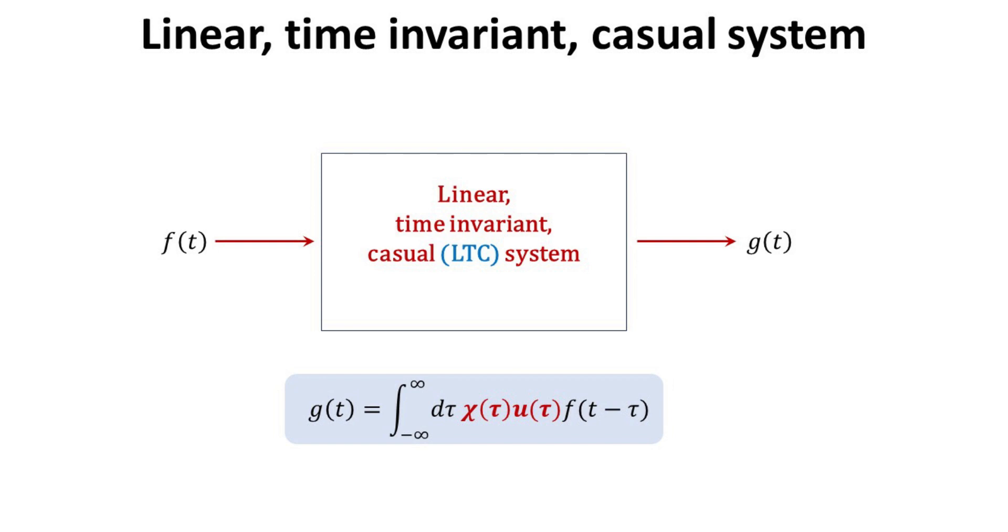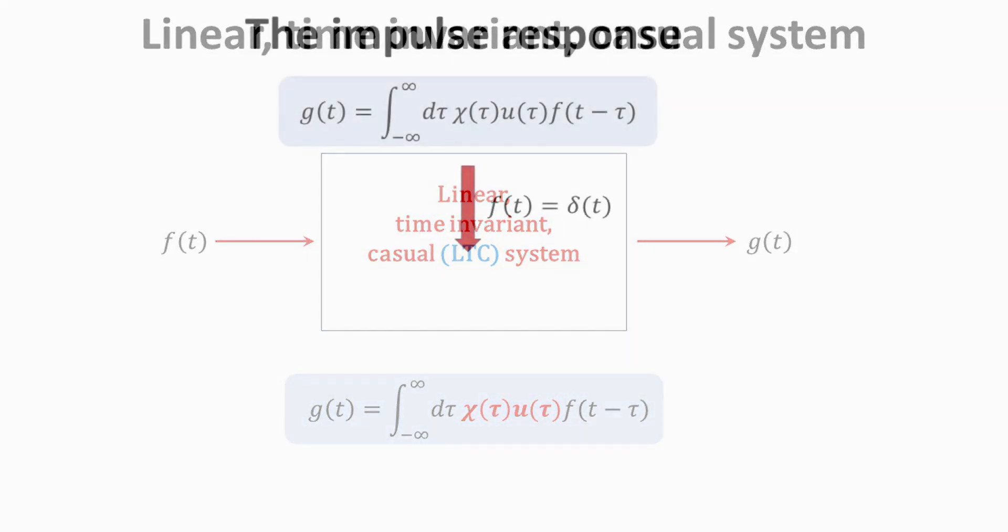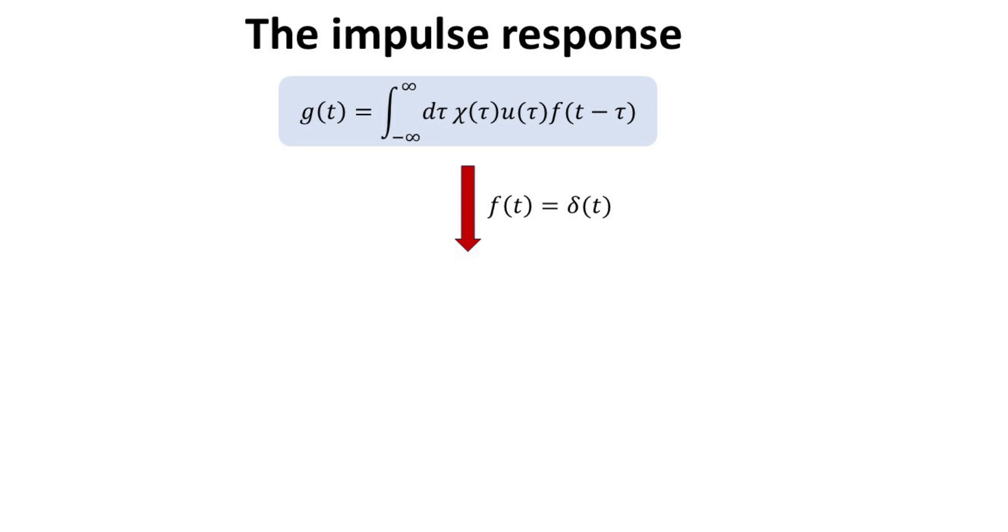In what follows, we shall show that the behavior of the output Gt of a LTC system can be mathematically described by the convolution of the input Ft with the impulse response of the system, herein denoted as chi multiplies by the step function u.